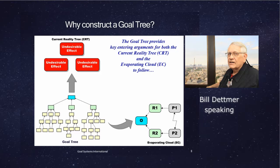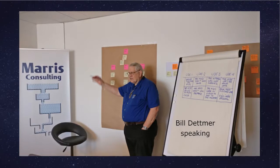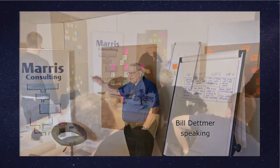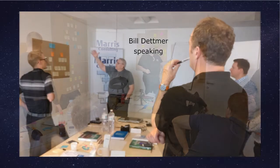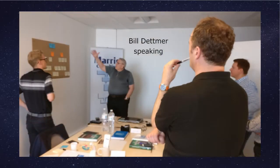Undesirable effects are undesirable only with respect to the benchmark established by the critical success factors and the goal. The maximum number of undesirable effects you can have is the sum total of the critical success factors plus the goal. In this case, with three critical success factors and a goal, the maximum number of system undesirable effects is four. If you had five critical success factors and a goal, the max would be six.